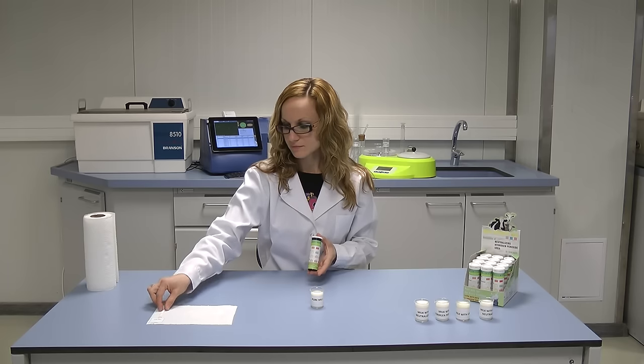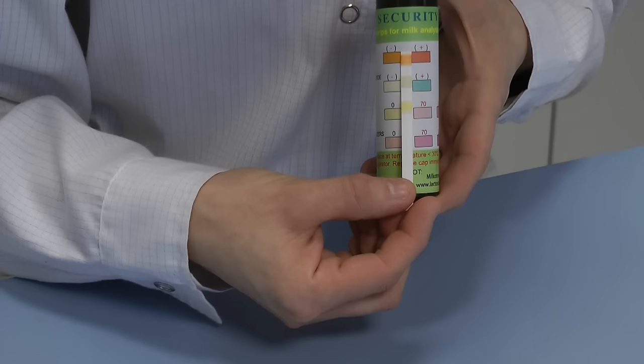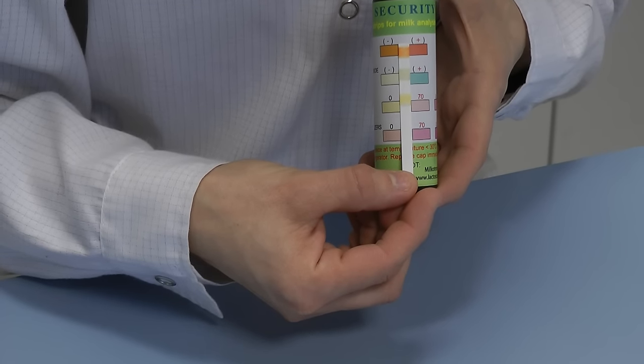Compare the color of the test strip with the color scale on the label. When there is no adulteration, the indication zone is not changing in color.